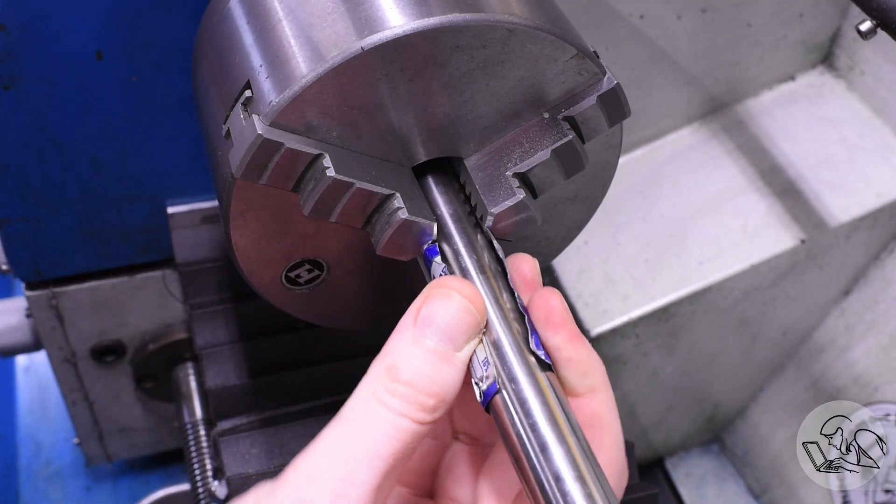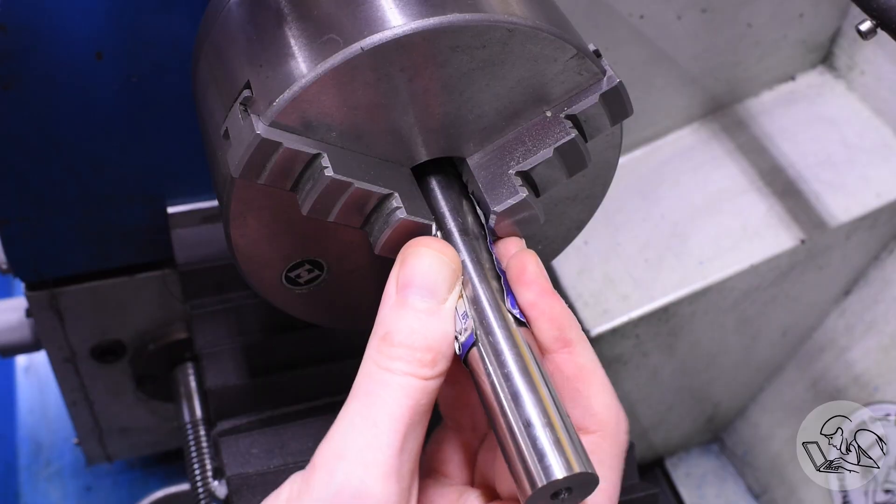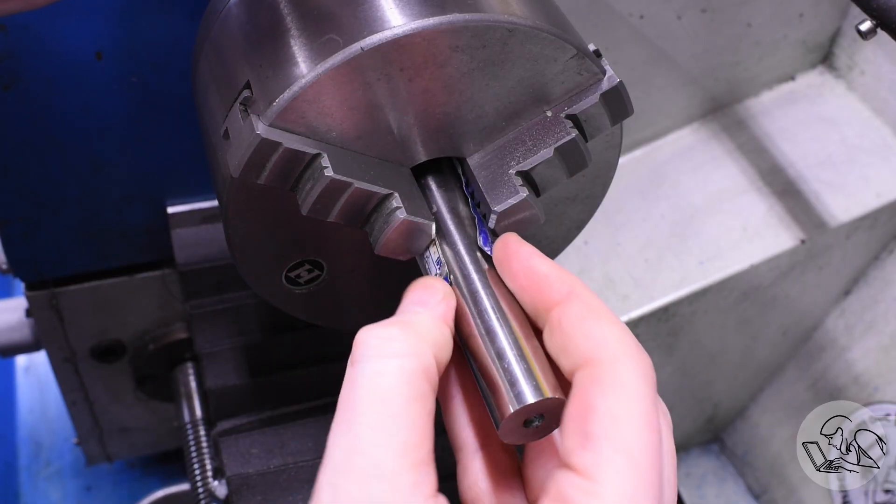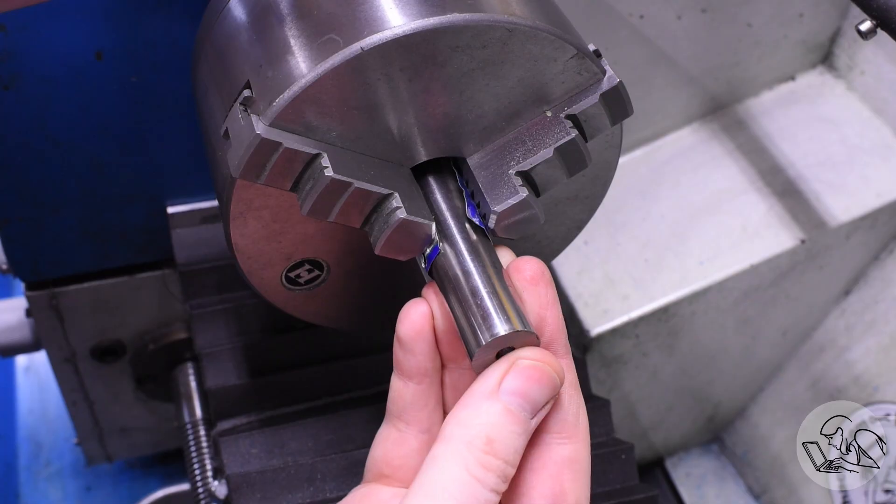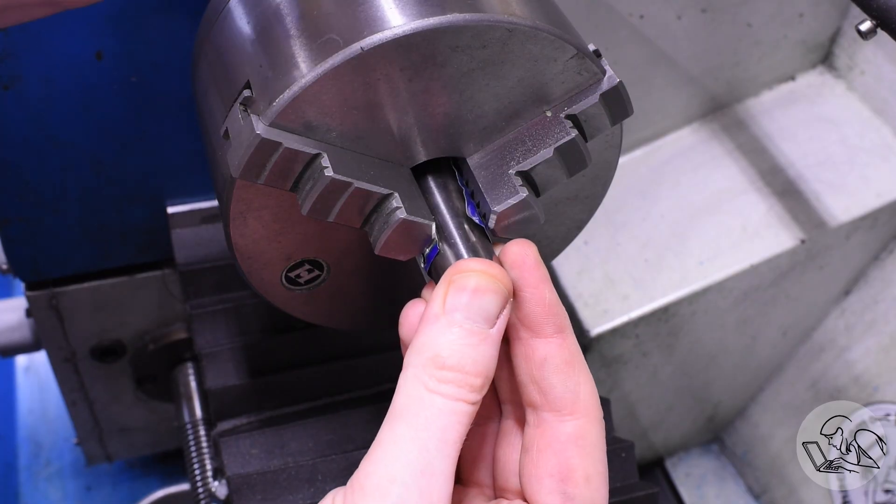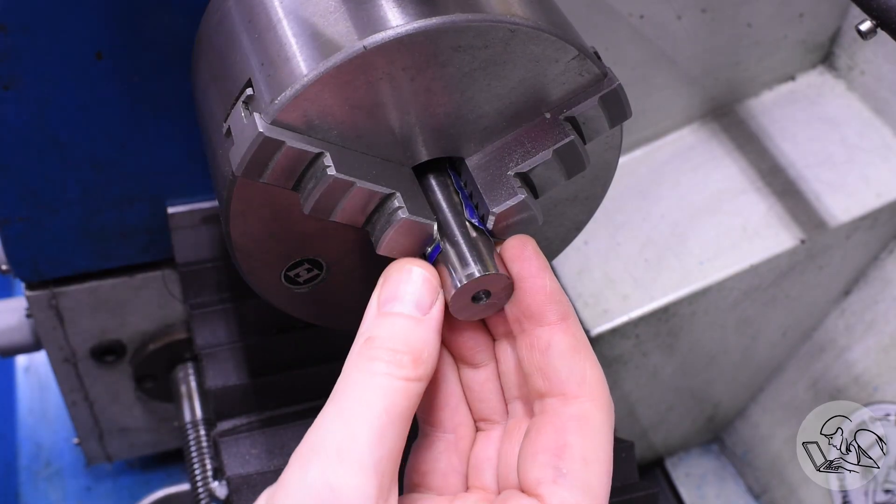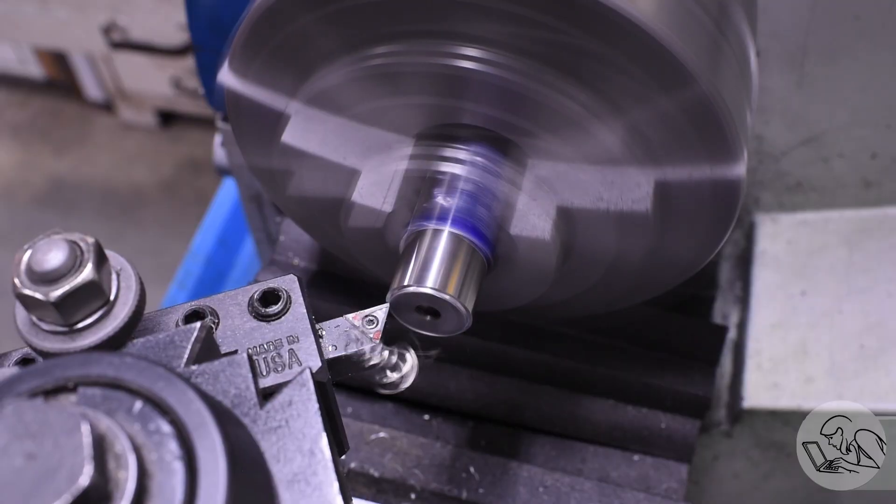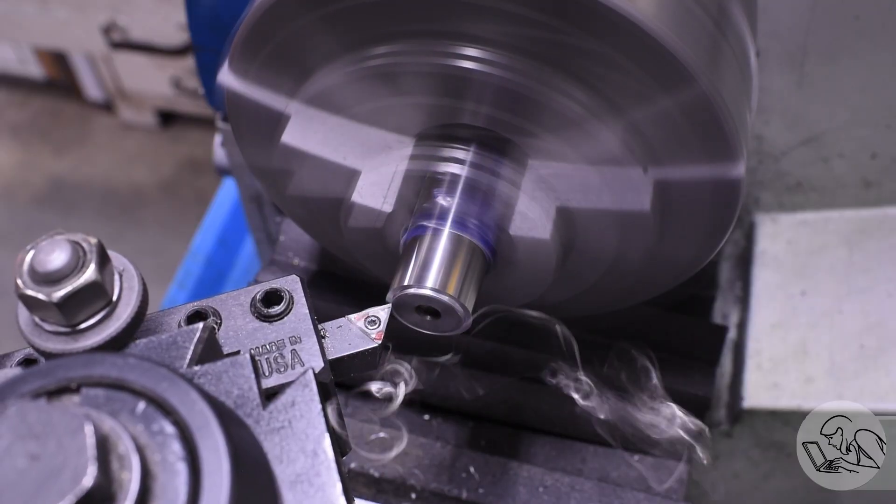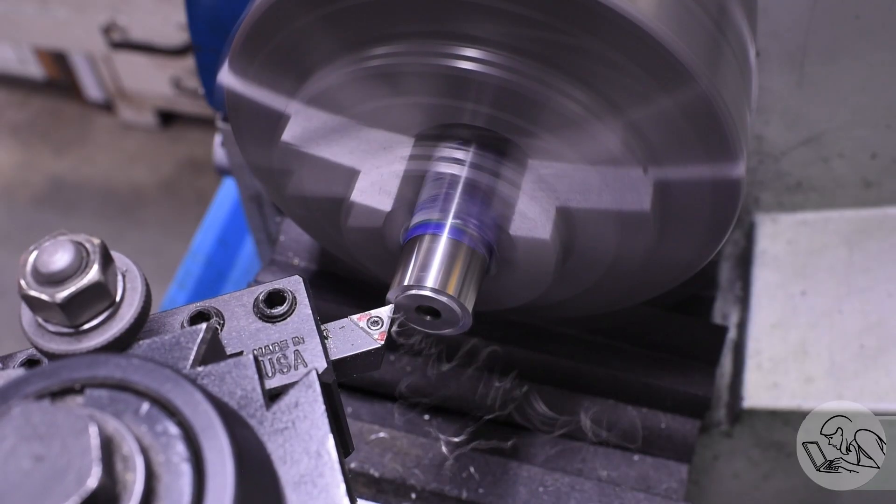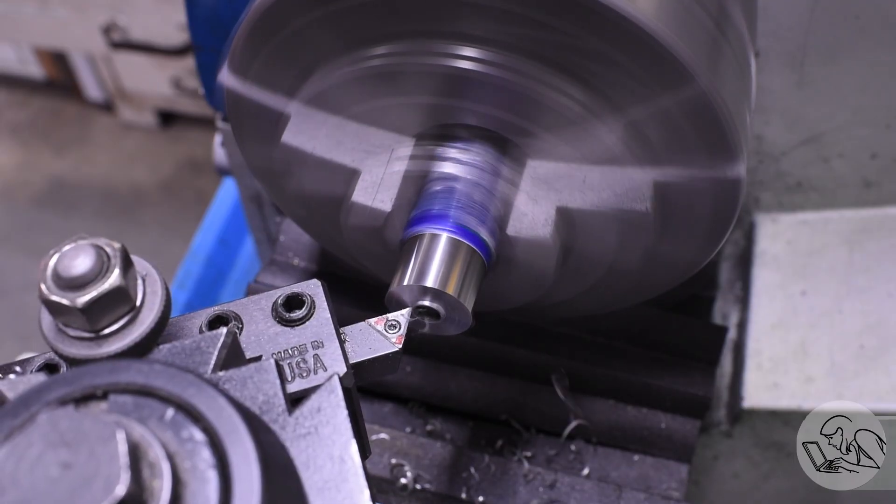You want to be thinking about your order of operations long before you even touch the stock. I'm going to start here by facing off the end as is tradition. This is your first order of operations decision. This facing cut is typically your first reference surface on a part in the lathe and reference surfaces that you have access to dictate a lot about what order you do various cuts in.